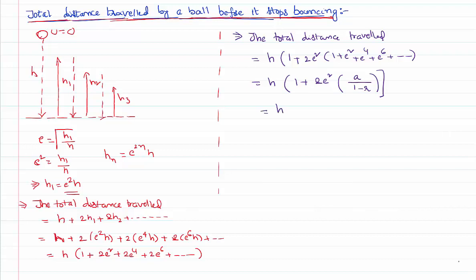So simplifying this further, h of 1 plus 2 e square of, first term is 1, 1 minus r is second term by first term e square, so simplifying this further.